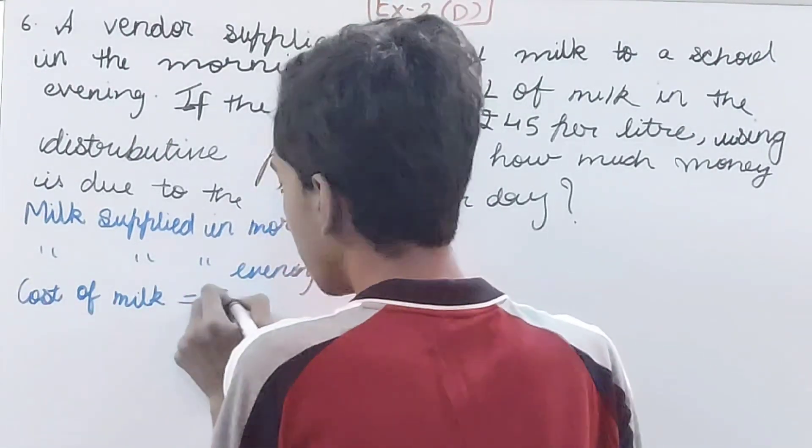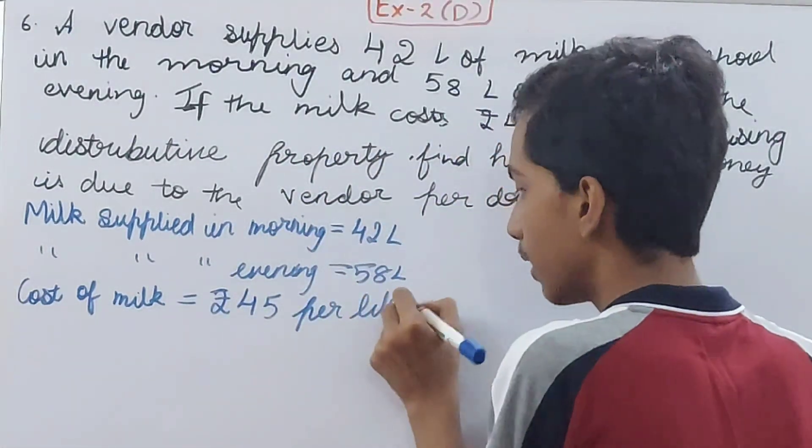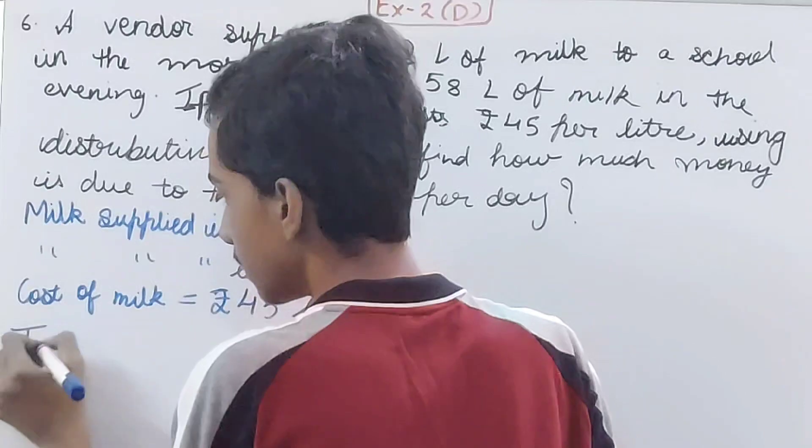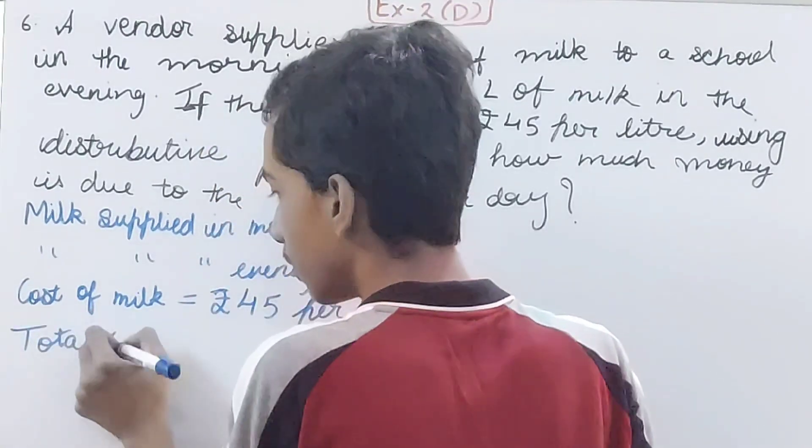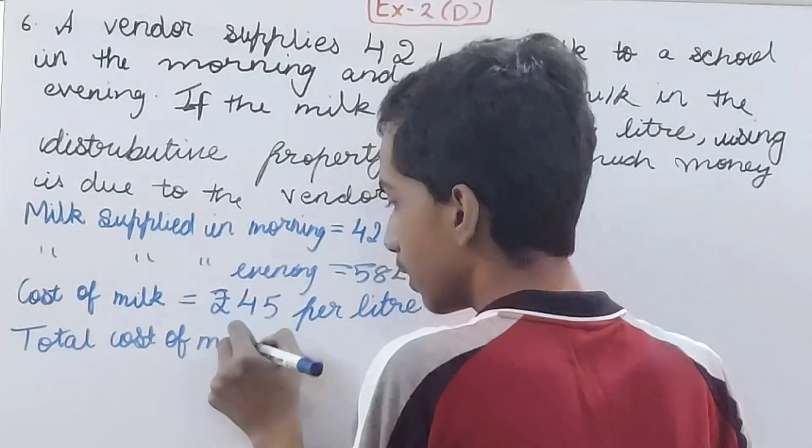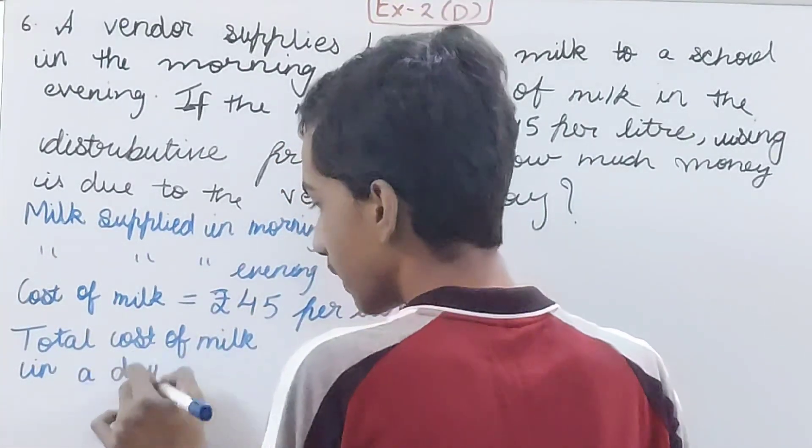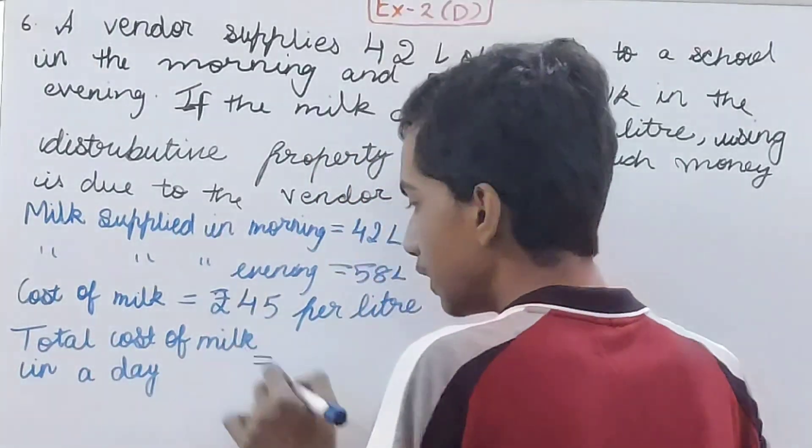That is rupees 45 per liter. So total cost of milk in a day, because we are calculating for the entire day.